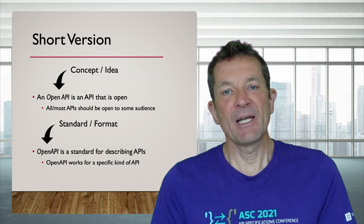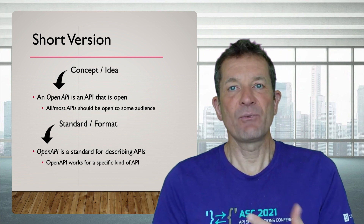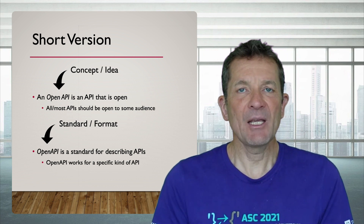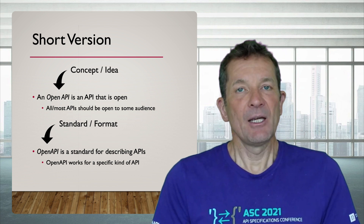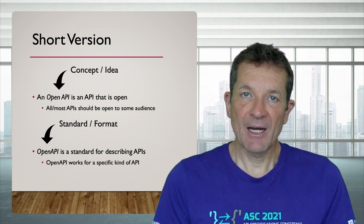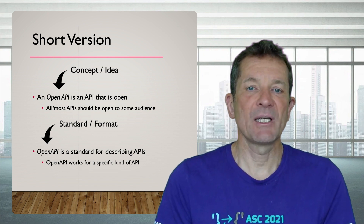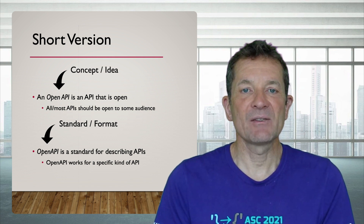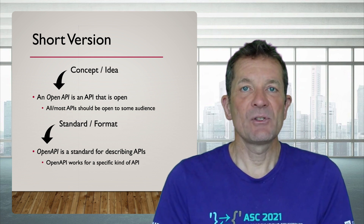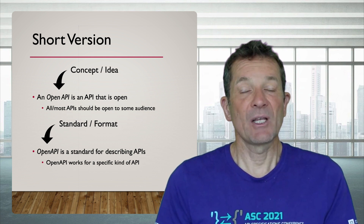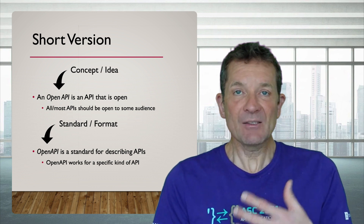On the other hand, OpenAPI is a standard. It's a format for describing APIs in a specific way. It works for a specific kind of APIs — HTTP APIs, resource-oriented APIs — and it is a format that allows you to describe that API so that others can more easily understand it. So that's the short version.